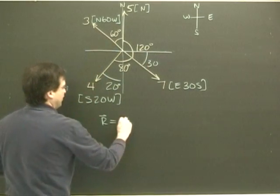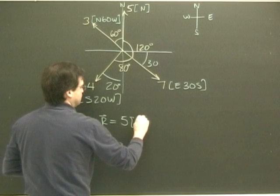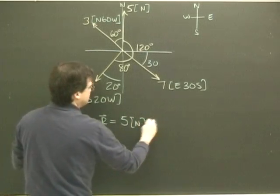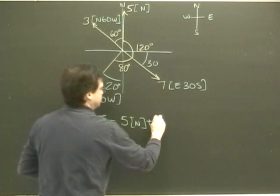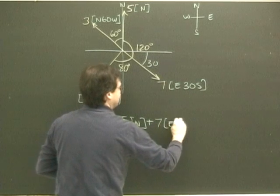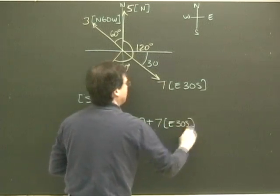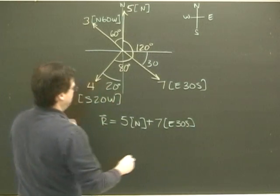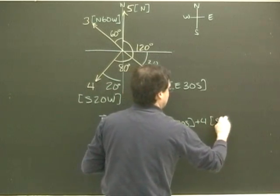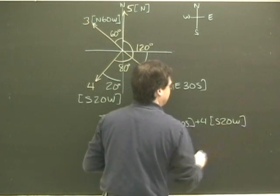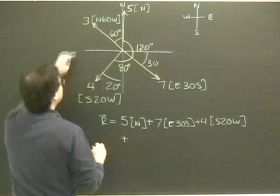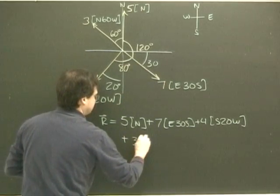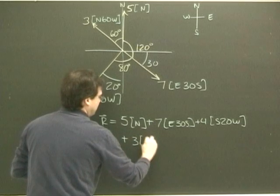So I'm just going to start with the 5 north, plus this one here: 7 east 30 south, plus 4 south 20 west, plus 3 north 60 west.